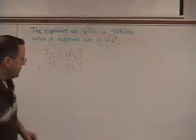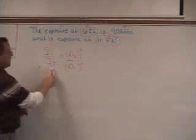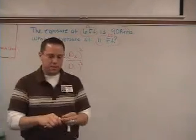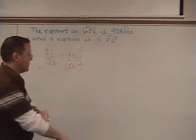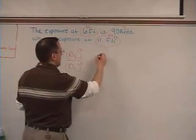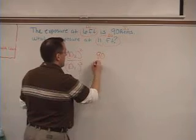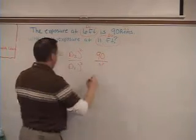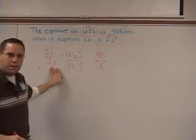All right, so this is the formula, I1 over I2 is equal to D2 squared over D1 squared. So we want to put in our numbers into this formula. So I1 is 90, and it's going to be over X, because we don't know what I2 is, that's the one that we're going to figure out.